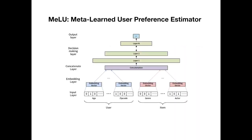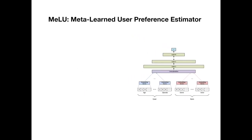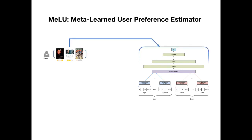This shows the structure of the user preference estimator. User profile and item content information pass through the embedding layer, and we concatenate them. After that, we connect the concatenated layer to an L-layer fully connected neural network, which we call the decision-making layer and output layer. You may not find a difference from existing deep content-based recommender systems. Now we will show what's different: by using a user's evidence, we update the weights in the decision-making and output layers. This process makes our model a personalized model.